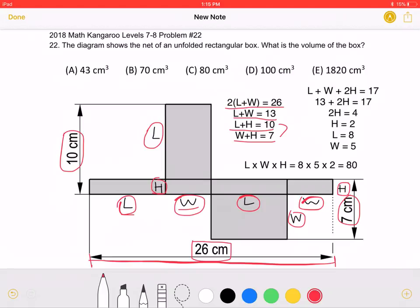If we take these two equations and combine them, we will get that length plus width plus 2 height is equal to 17. From over here, we already know that length plus width is equal to 13. So we can replace length plus W over here with 13. So we get that 13 plus 2 height is equal to 17.